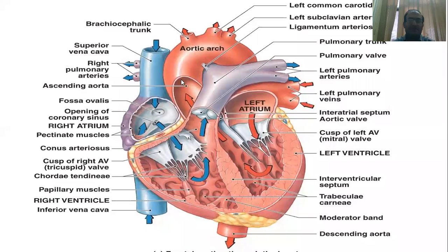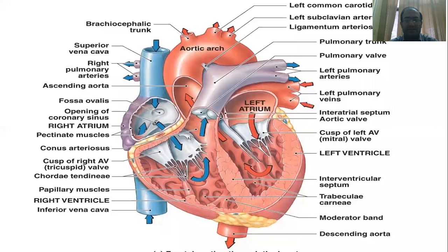This is the Aorta. You can see here that there are three big arteries, which are the brachiocephalic trunk on the right side of the body, where it goes to the right common carotid artery and right subclavian artery. The other two arteries — there is no concept of a left brachiocephalic trunk — directly the left common carotid artery and left subclavian artery.